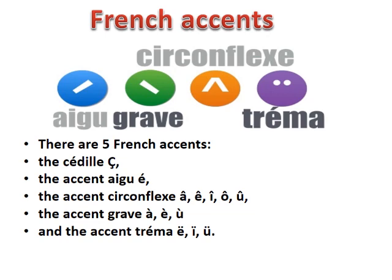The Accent Grave is found on letters A, E, and I. The sound changes only with E. The last one is the Accent Tréma, which is used when two vowels come together and both need to be pronounced separately.